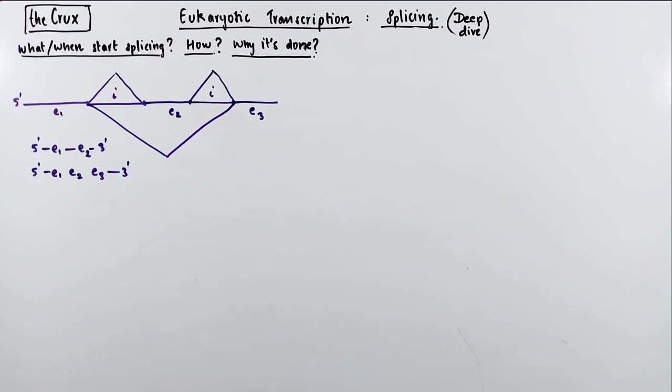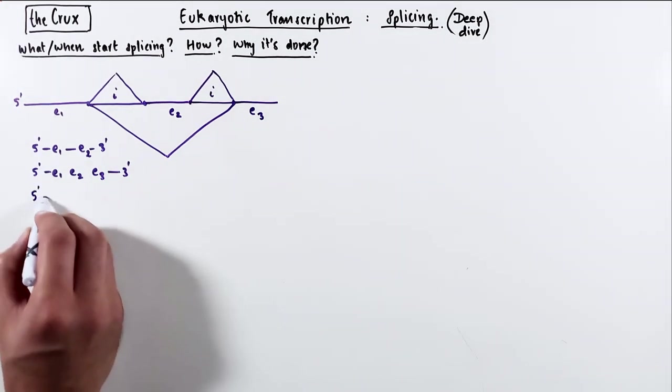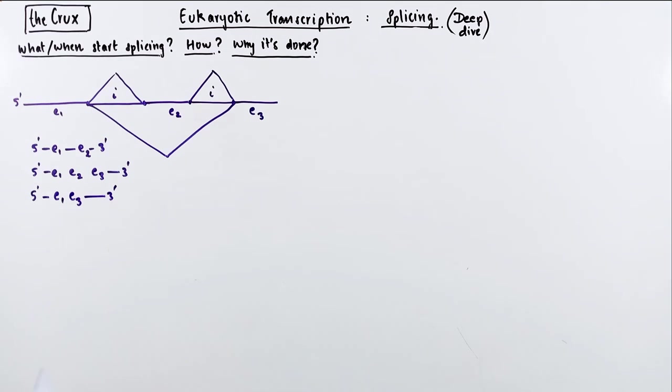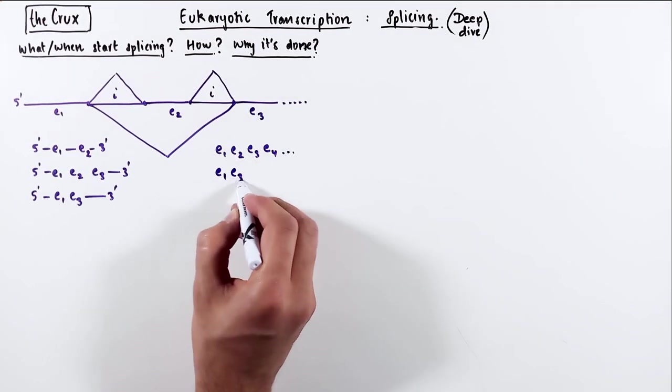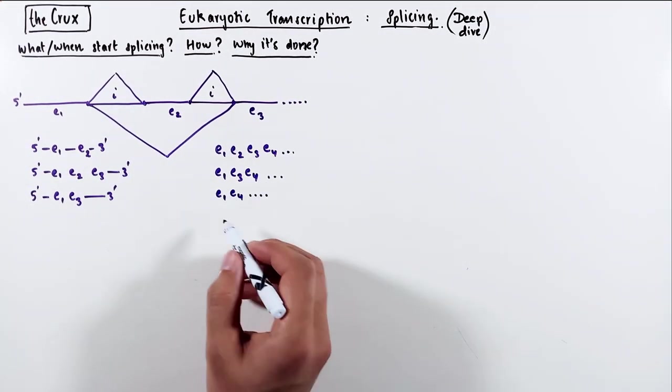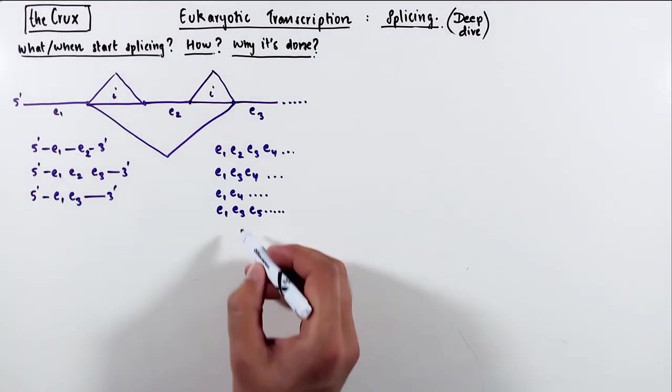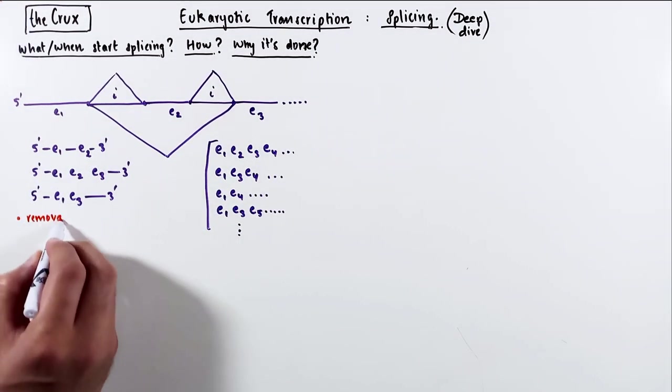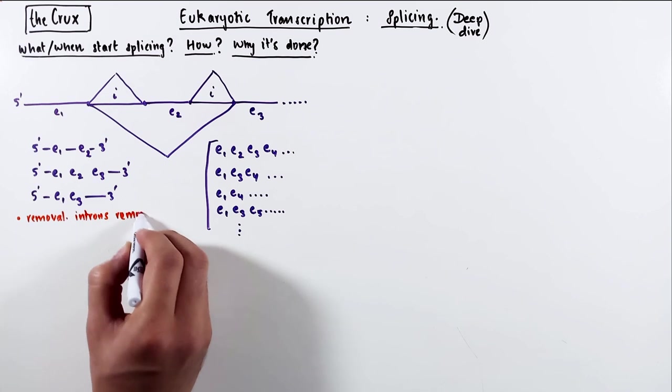But you can also imagine that splicing can occur between exon 1 and 3. So you remove exon 2 as well. And now the mRNA will get E1 and E3 only. And if you have a fourth exon, you can imagine a wide number of possibility for the spliced exons.